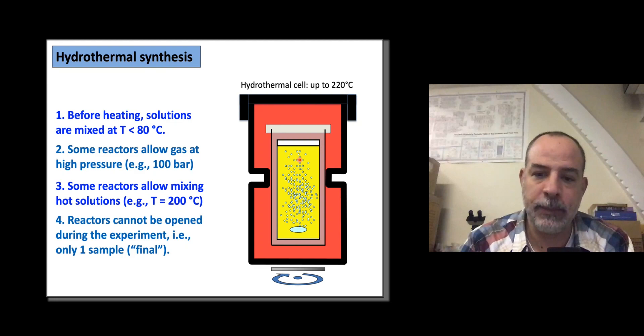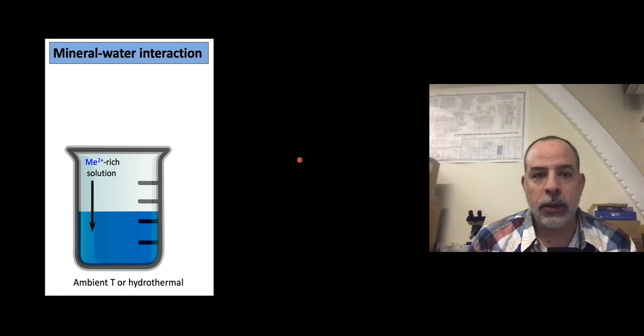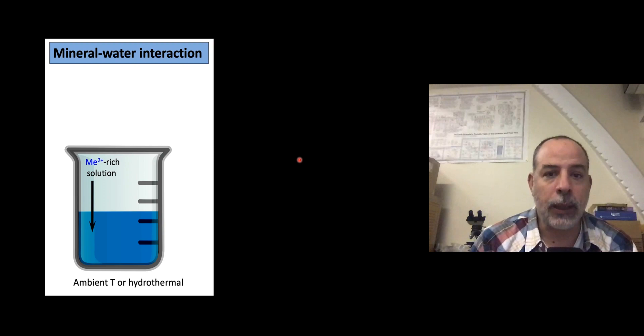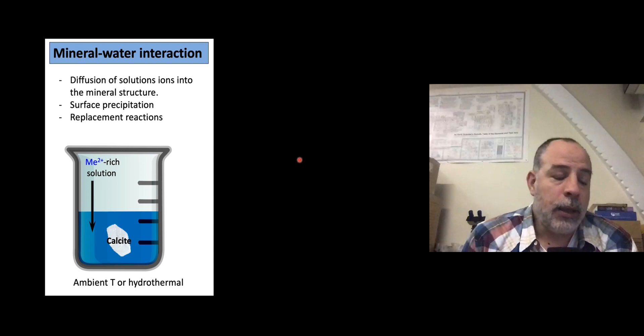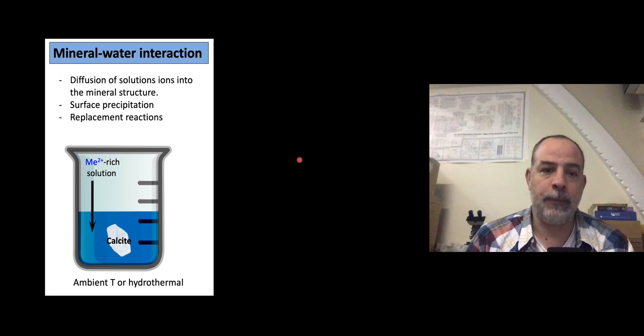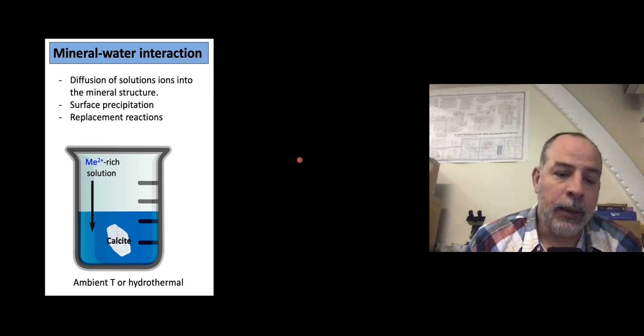Another very common method is mineral-water interaction processes. Here, you interact solutions containing ions or organics with minerals, either at ambient temperature or hydrothermally. Different processes may happen: diffusion of ions from the aqueous solution into the host mineral, surface precipitation, and in some cases even full replacement reactions.